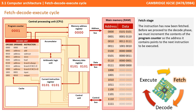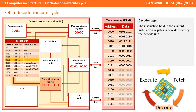The instruction has effectively now been fetched from memory. Just before we proceed to the decode phase, we increment the program counter so that the address it contains points to the address of the next instruction which will need to be executed. The instruction now held in the current instruction register is ready to be decoded.